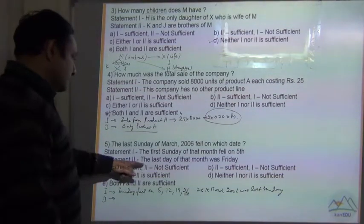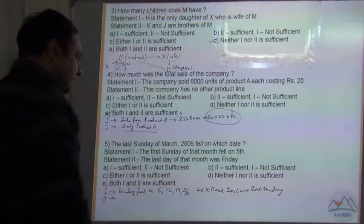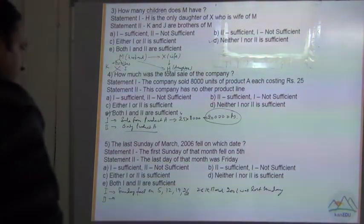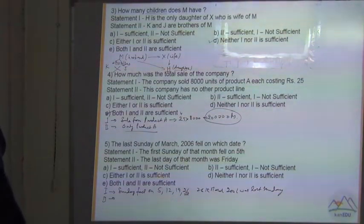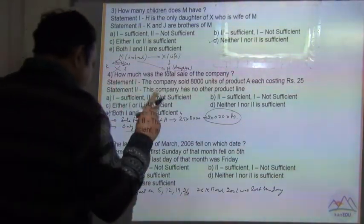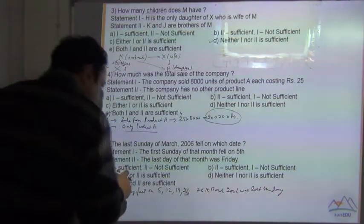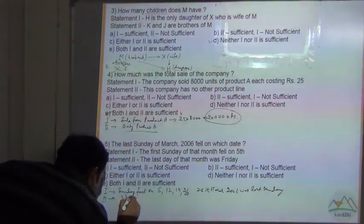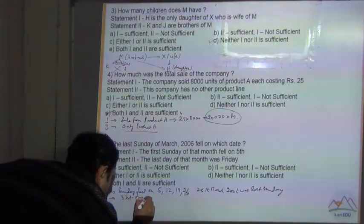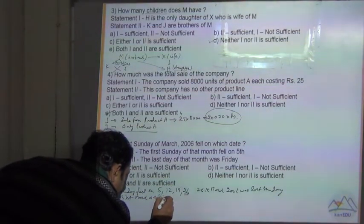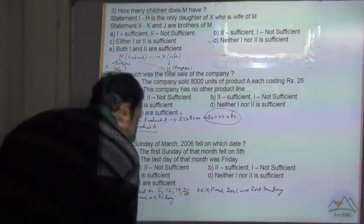Now let's see Statement 2. The last day of that month was Friday, the 31st March Friday. The last day of March is the 31st day of March. So the 31st March was Friday. Let's calculate backward.